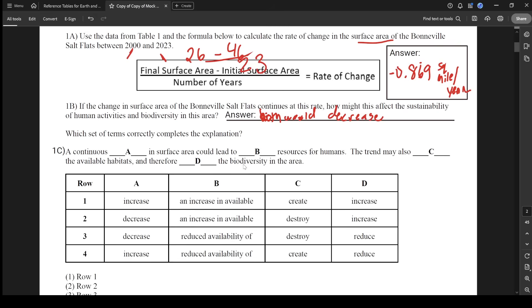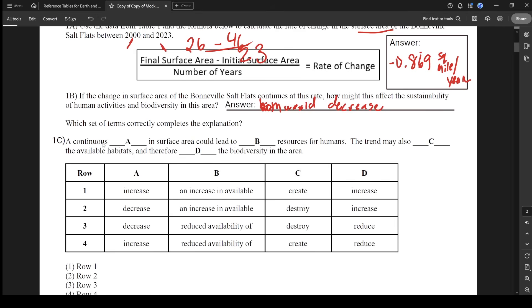Which set of terms correctly completes the explanation? It says a continuous blank in surface area could lead to blank resources for humans. So this is a negative situation. We're going to go with a continuous decrease in surface area. So that's going to be two or three. Could lead to reduced availability of human resources. So it's definitely not increasing available resources. This trend may also destroy the available habitats and therefore reduce the biodiversity in the area. So row three is the only words that make sense in those blanks.